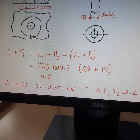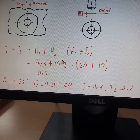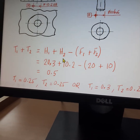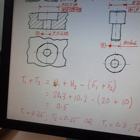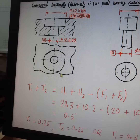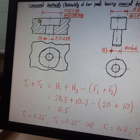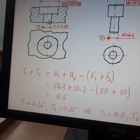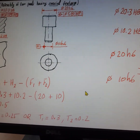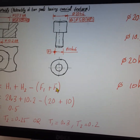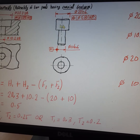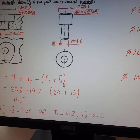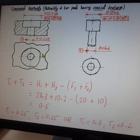So what is h1 and h2? H1 is the MMC size of the bigger bore. Similarly, h2 is the MMC size of the smaller bore. F1 is the MMC size of the bigger end of the shaft. F2 is the MMC size of the smaller end of the shaft.